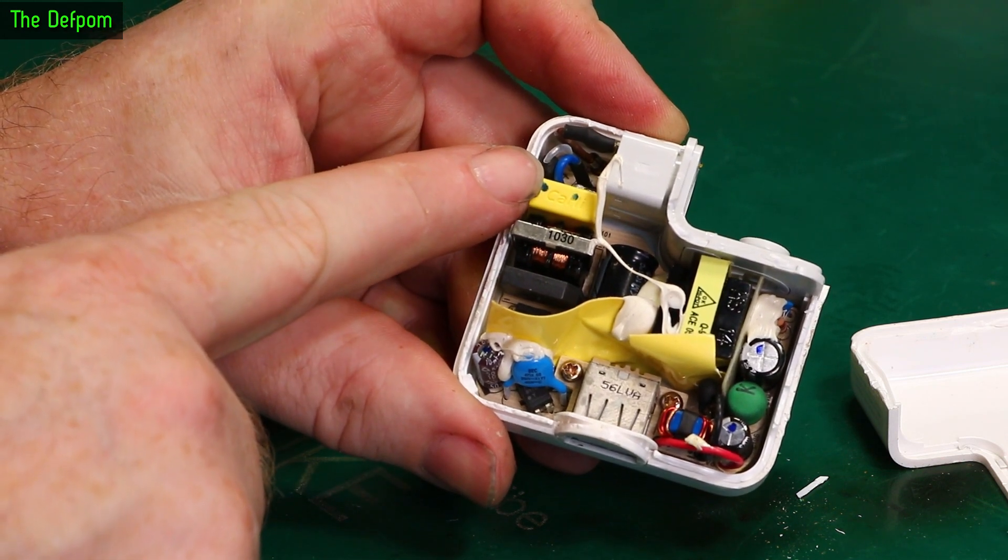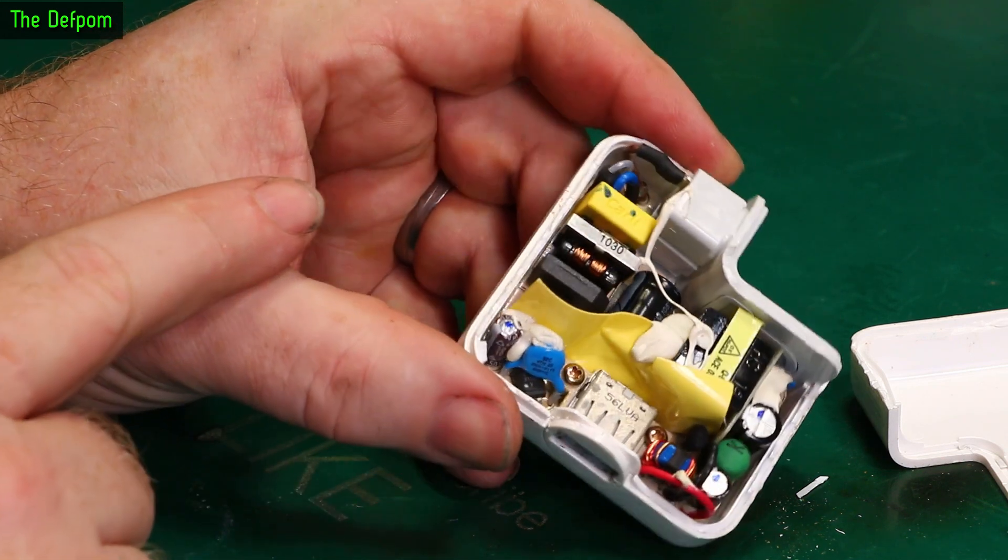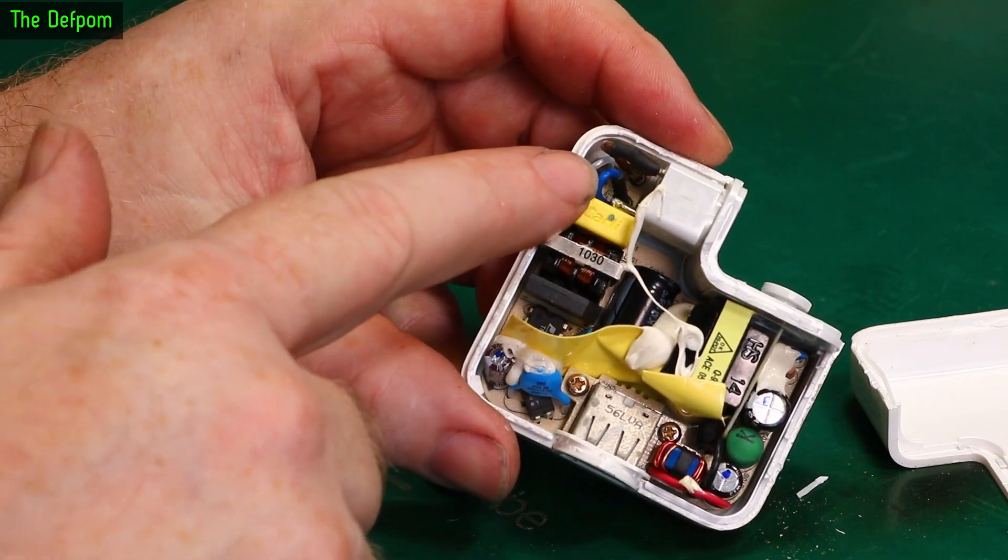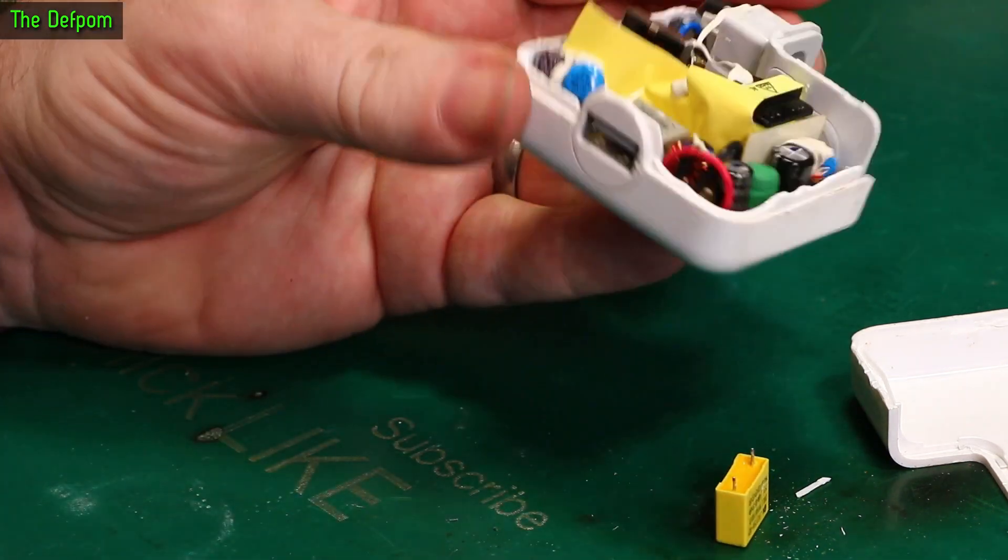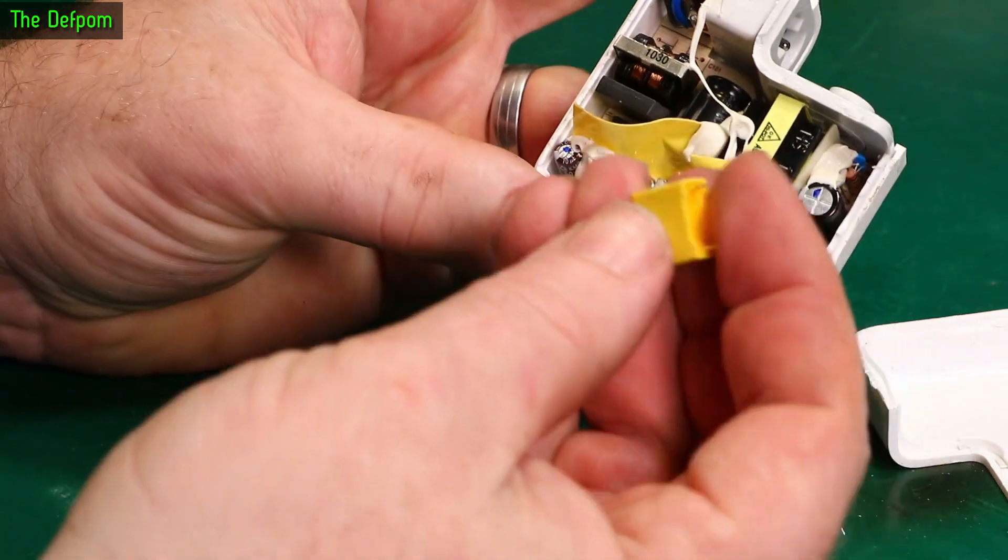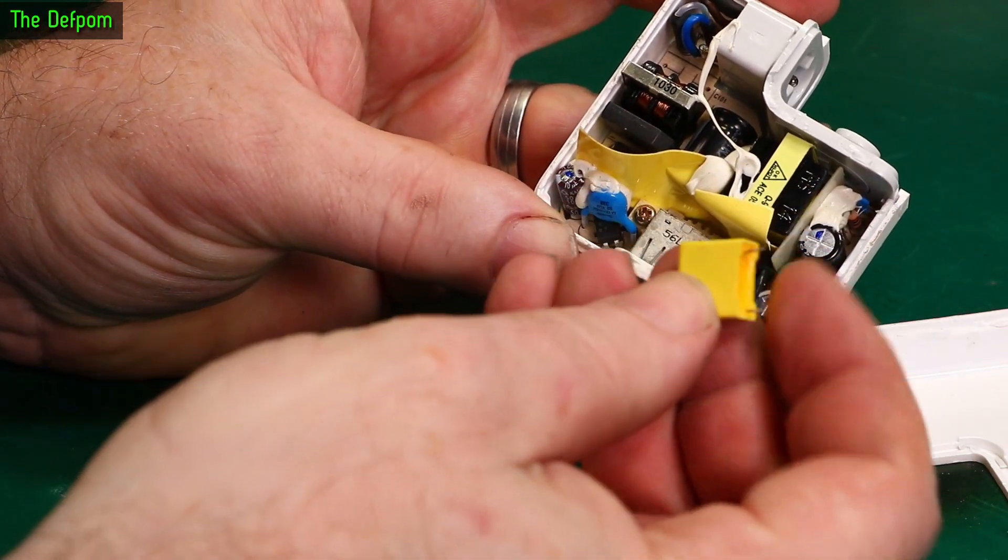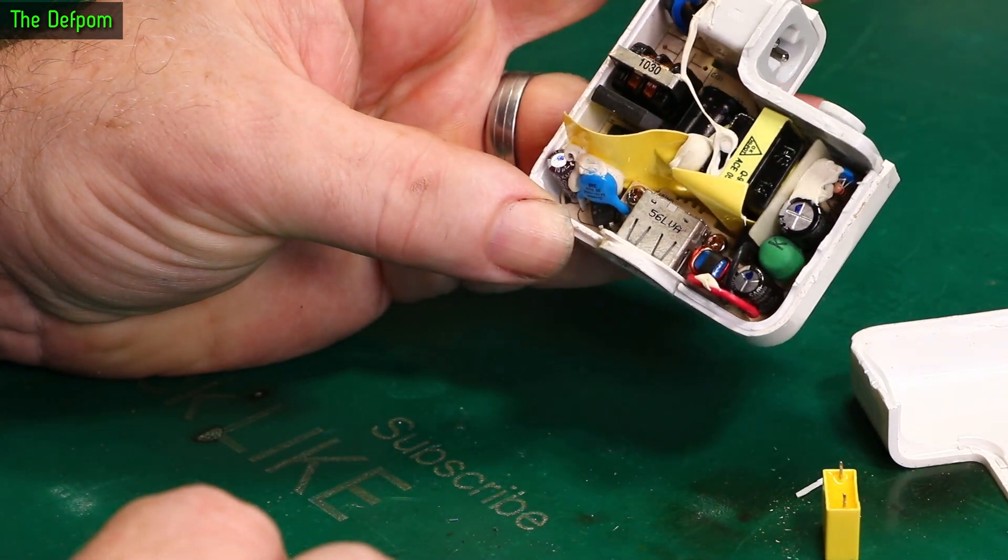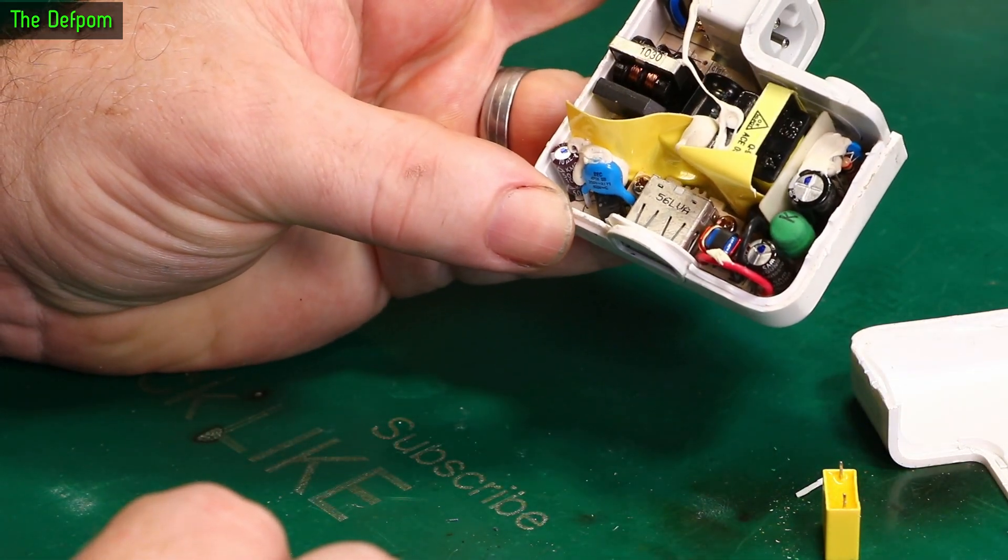The first thing I noticed is that this capacitor here is on a bit of a lean. So, I've sort of manipulated it some more. Yeah, it fell out. Now that won't be from me messing around getting the casing open.